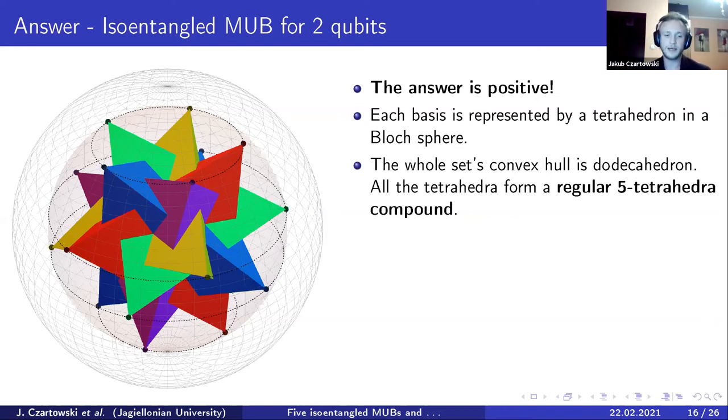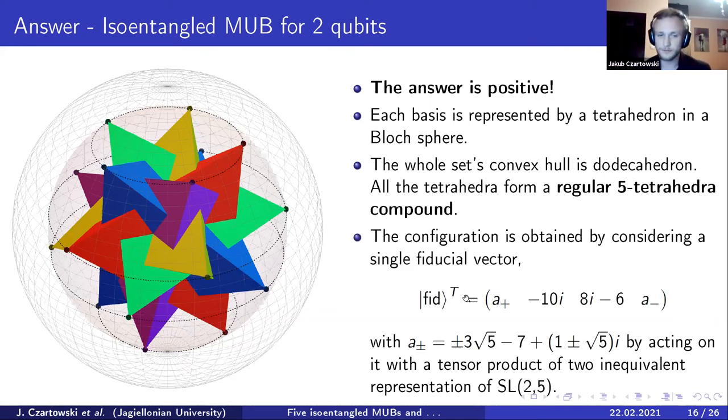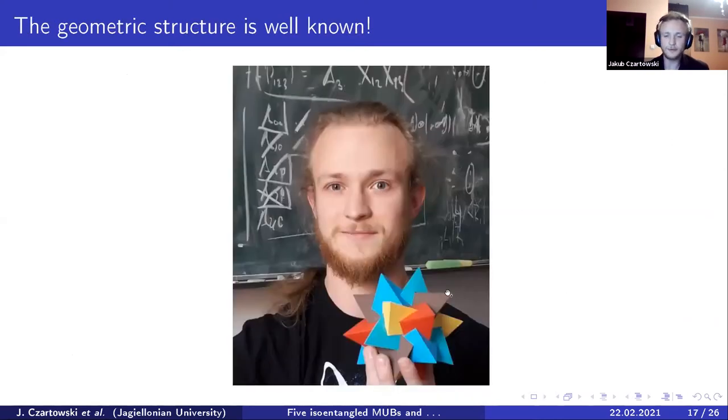The full set, as a convex hull, is represented by a dodecahedron. And this particular representation, this particular solid, is called a five tetrahedra compound. Moreover, very closely related to the way that SIC POVMs are usually obtained, this configuration can be obtained from a single fiducial vector by acting on it on a tensor product of two inequivalent representations of a special linear group of dimension 2 over the field with a square root of 5. This is a very well-known solid, and basically for all the amateurs of paper craft, it can be actually glued from paper and can be easily found online. So we are not taking on anything that is not well known, and we are kind of surprised to see this structure pop up.